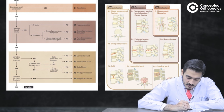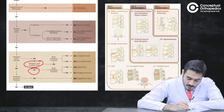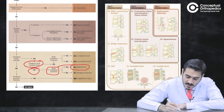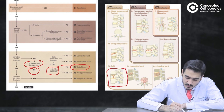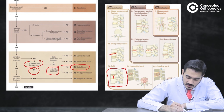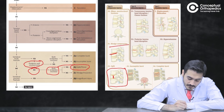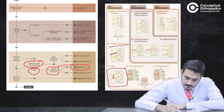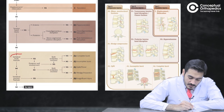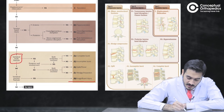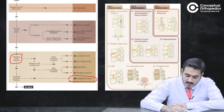If the posterior wall is not involved, check whether both end plates are involved — if so, it will be an A2 type fracture. If both end plates are not involved, it will be an A1 fracture, or wedge fracture. If there is no vertebral body fracture at all, it is classified as A0, an insignificant injury, which may be just a spinous process fracture or a transverse process fracture.